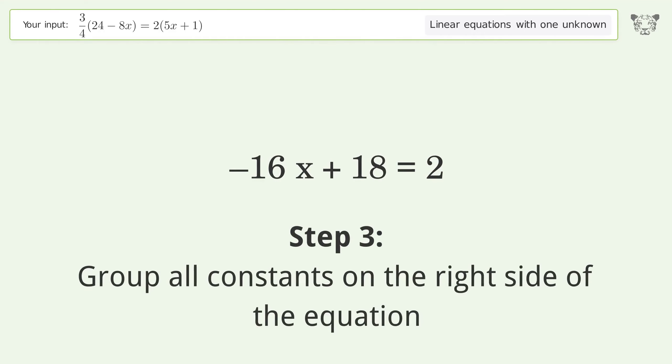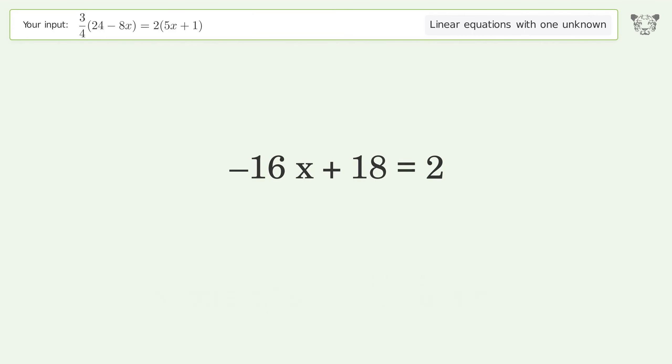Group all constants on the right side of the equation. Subtract 18 from both sides. Simplify the arithmetic.